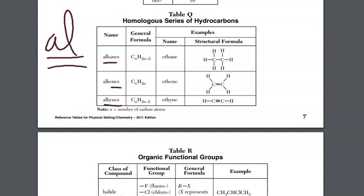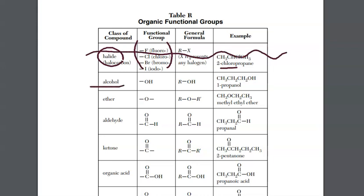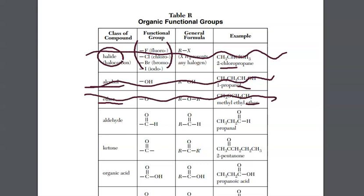So that means we need to go to reference table R. With reference table R, literally just go through each one — you're going to see for halides, any of those groups show up as a prefix. It wasn't there, can't be it. I go to alcohols; the ending is OL. We need AL, can't be it. Ether — the word ether is in the name, it wasn't there. We go to aldehyde.